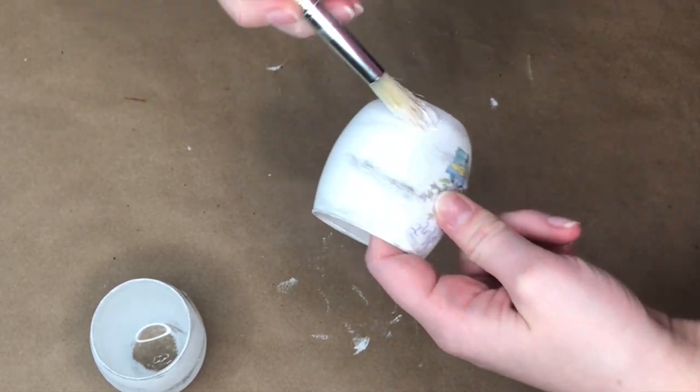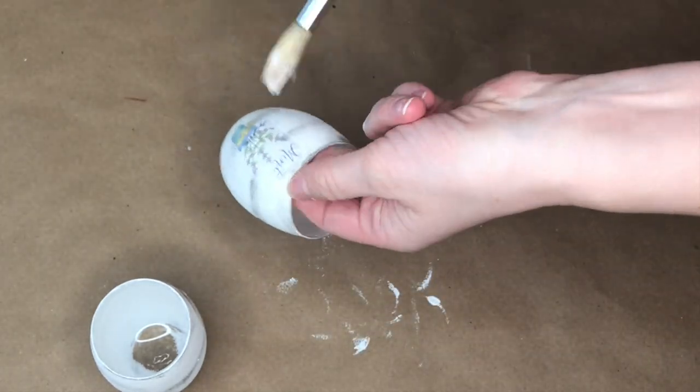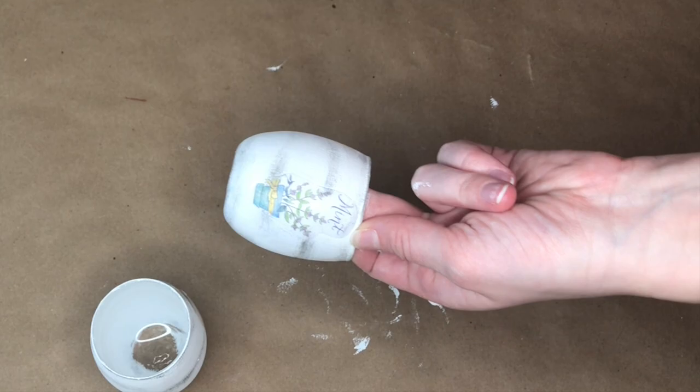Next, to seal everything in, I took a little bit of mod podge and just brushed it all over the jar so that the label wouldn't be coming off and I wouldn't have to worry about any chipping.